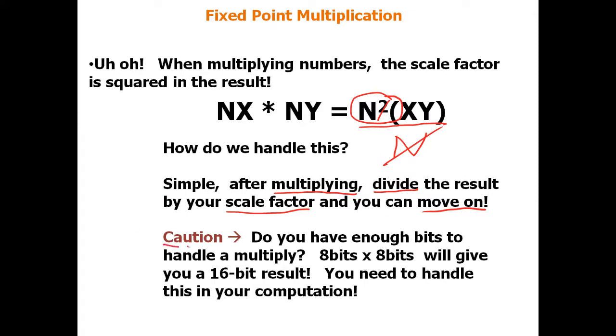Alright, so caution. Do you have enough bits to handle a multiply? Think about this. Eight times eight bits will yield a 16-bit result. So if this is an eight-bit number here, and this is an eight-bit number, you may need, because we have a scale factor squared, you need additional bits to handle the precision. So if you're using C, you've always got to keep this in mind. Whatever you're multiplying into has to have more bits than the source variables. Or you have to ensure that the numbers are so small that you never have more bits than your data type can allow. But almost always, universally, whatever you're multiplying into has more bits to handle it.